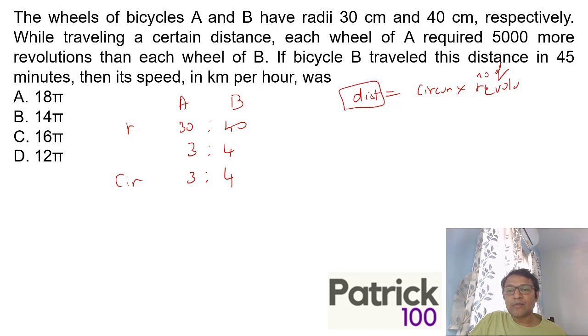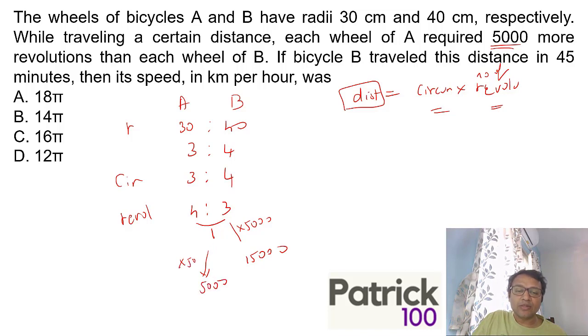Now, since distance is constant, when the product of two things are constant they are inversely proportional to each other. That means number of revolutions has to be 4 to 3, because circumference times revolution is constant. The difference is 1, we want difference is 5000. Automatically B will cover 3 times 5000, which is 15,000 rounds.